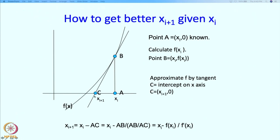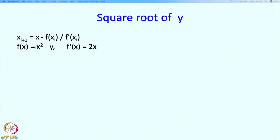In the picture, C is likely to be a much better approximation. If the curve is almost a straight line, we would get to the root in one shot. Now let us apply the formula xi+1 = xi - f(xi)/f'(xi) to find the square root of y. Our function f(x) = x² - y and its derivative f'(x) = 2x. Substituting, for f(xi) we get xi² - y, and for f'(xi) we get 2xi.